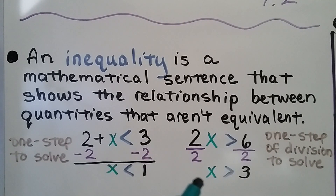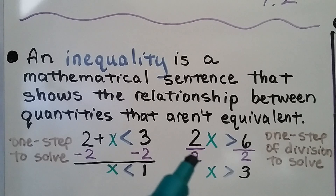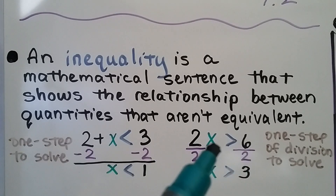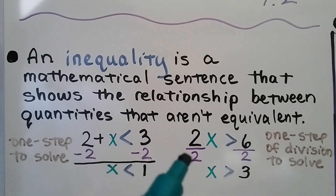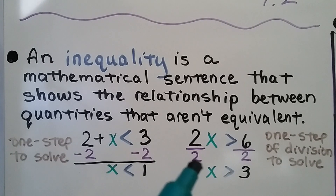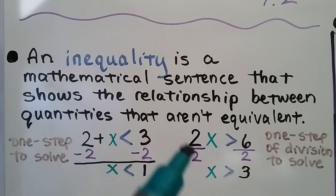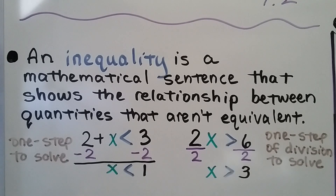For this one, we have 2x is greater than 6. This is a one-step inequality. We're going to use division to solve. We multiply 2 times x — some number — and it's going to be greater than 6. So we divide both sides by the coefficient 2. It's the inverse of multiplication. We get 1x is greater than 3. That's a one-step inequality.